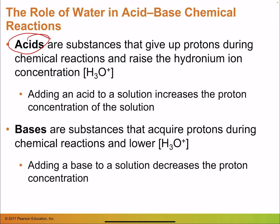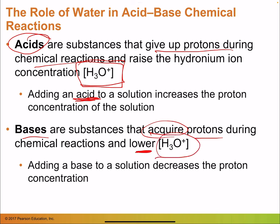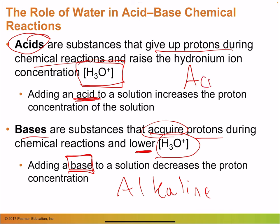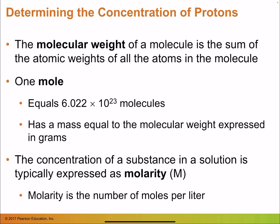Acids are substances that give up protons during chemical reactions, raising hydronium ion concentration and making the solution acidic. Bases acquire or take protons, lowering hydronium ion concentration and making the solution alkaline. You've probably heard of alkaline water as healthy and acetic acid as vinegar.